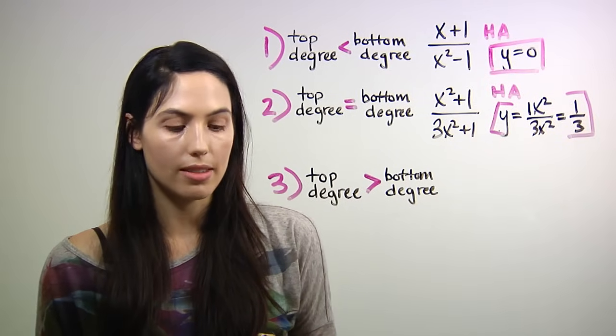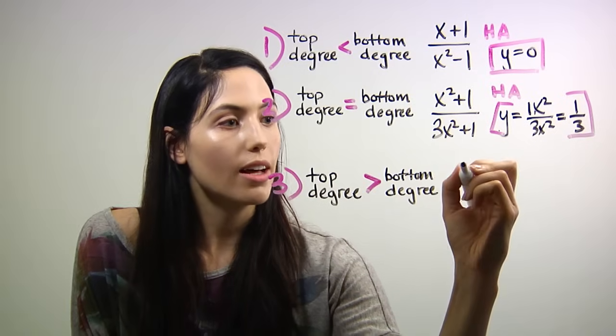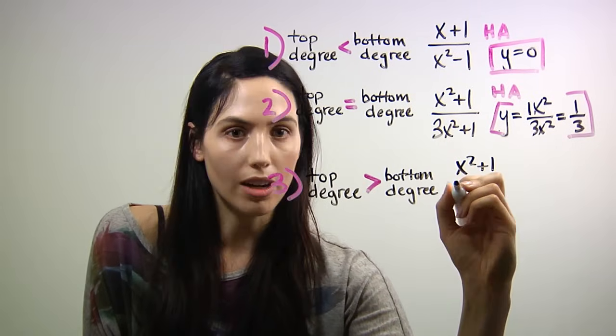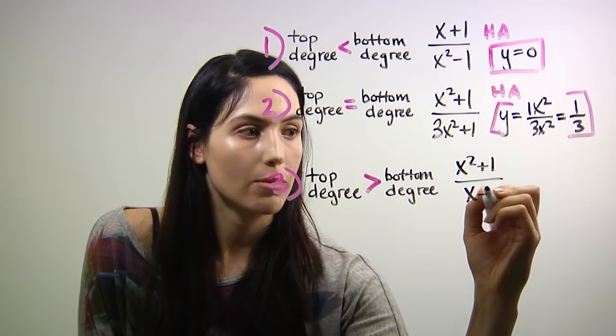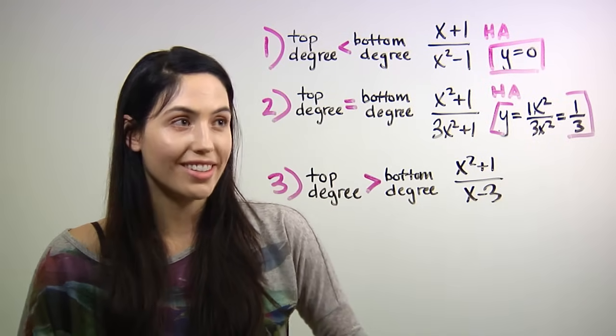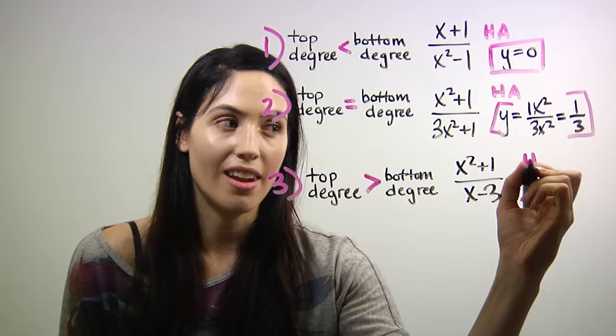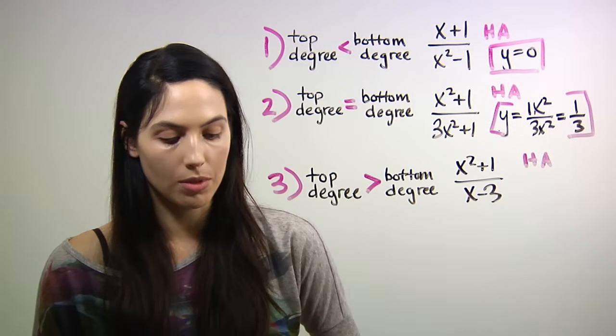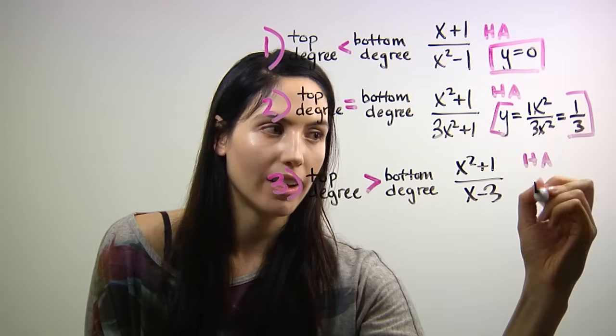Okay, third case, if your degree on top is larger than your degree on the bottom, you don't have a horizontal asymptote. So your answer is actually just none. For horizontal asymptotes specifically, you would write none.